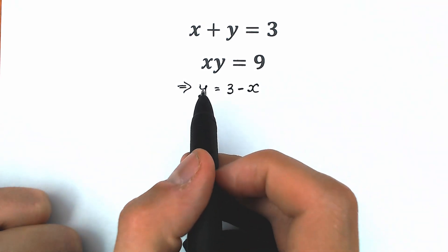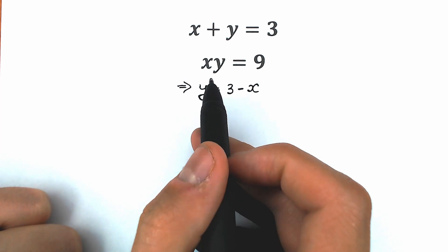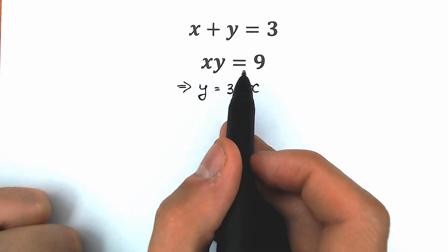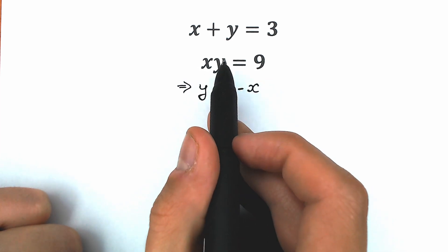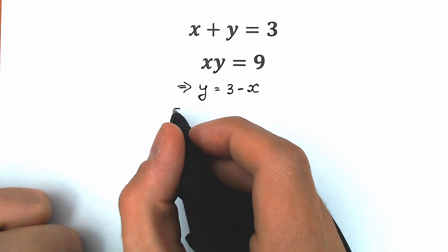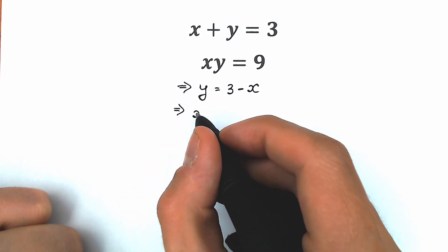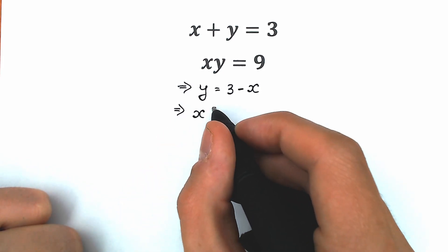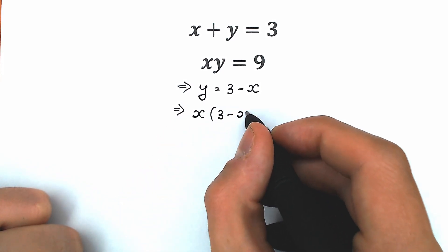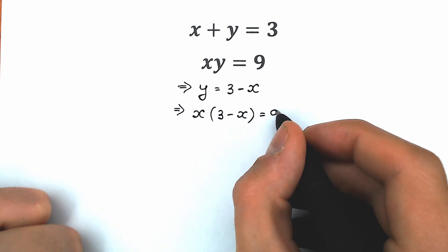Right now, let's plug in this y into the second equation. We know that x times y equals 9, and instead of y, let's plug in 3 minus x. Let's see what will happen. So we have x times (3 minus x) equals 9.